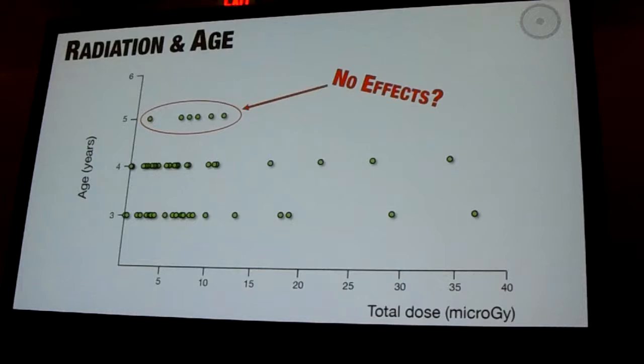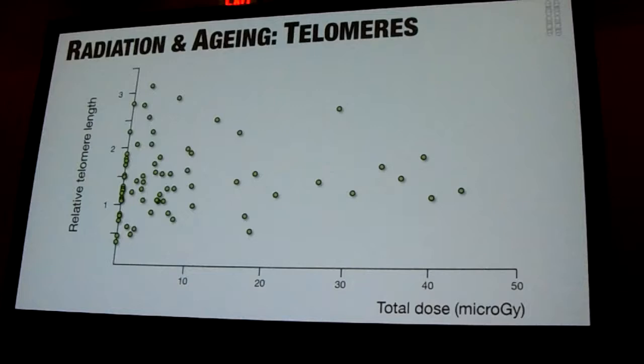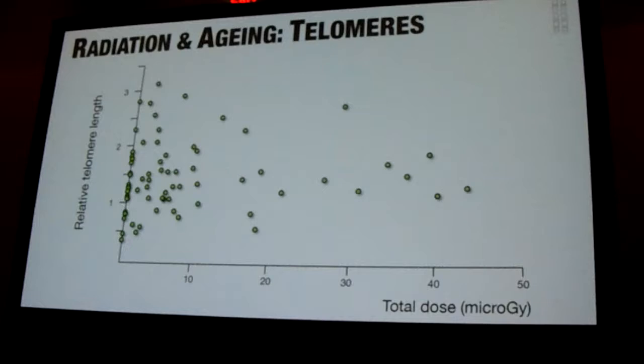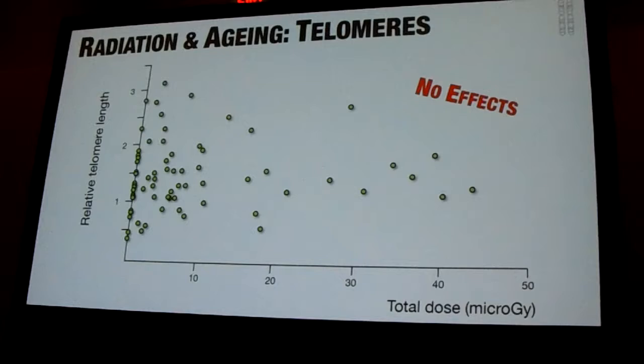It's the same with ageing. We have been looking at telomeres — the cap ends of chromosomes that get shorter with cell division, which is a good proxy for ageing in many organisms. Looking at the dose rate of each individual in relation to relative telomere length, again there is really nothing there. It doesn't look like living in a really highly contaminated area is accelerating the ageing of those individuals.